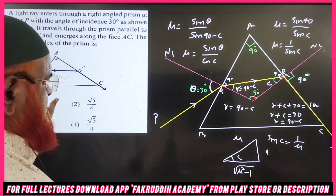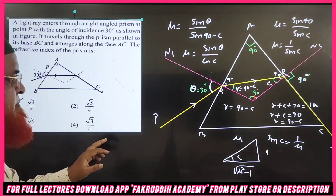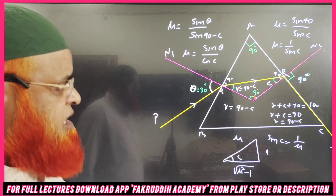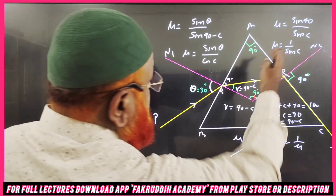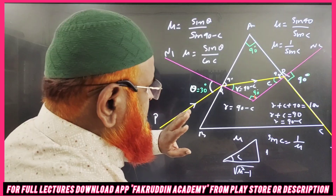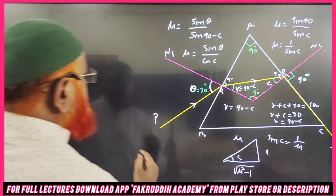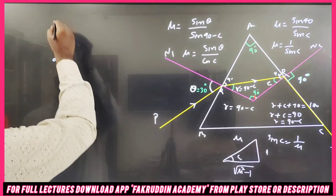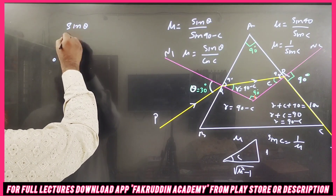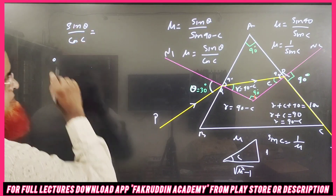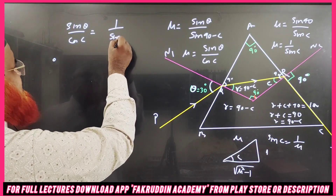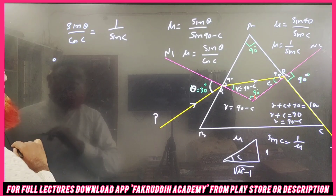We now have two equations: μ = sin θ / cos c, and μ = 1 / sin c. Setting them equal gives sin θ / cos c = 1 / sin c.